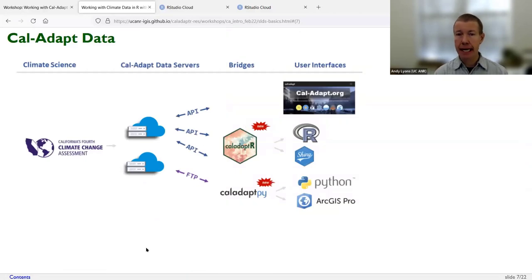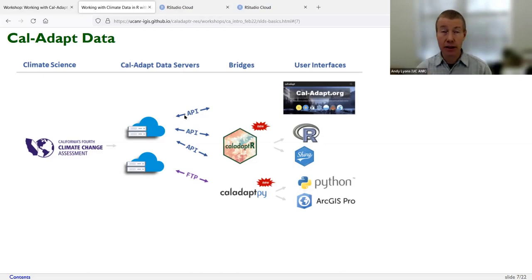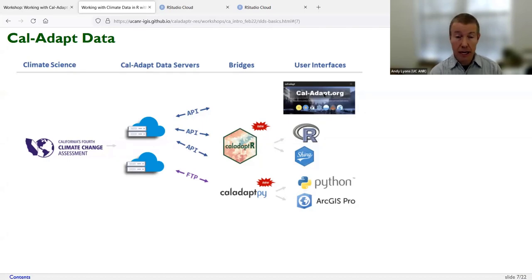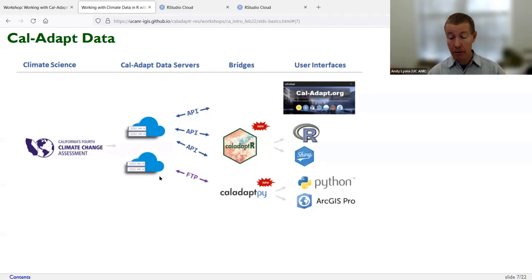All data was developed through the fourth climate change assessment and saved as raster files on servers. An API — a language that computer programs understand — is how most data is accessed. The Cal-Adapt website uses that API, and the R and Python packages we'll use today also call it. There's also an FTP server for the large NetCDF source files, but the API makes it easier to retrieve just the data you need.